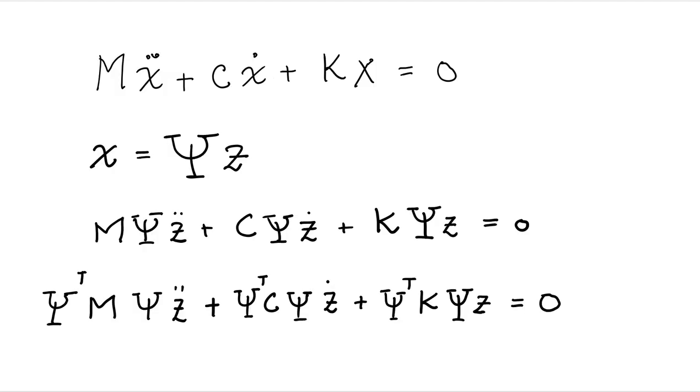So if we begin our analysis with the typical equation of motion here, and we use the coordinate transformation to get us to modal coordinates, and we say x is phi times z, where phi, psi uppercase, is the matrix of mode shapes.